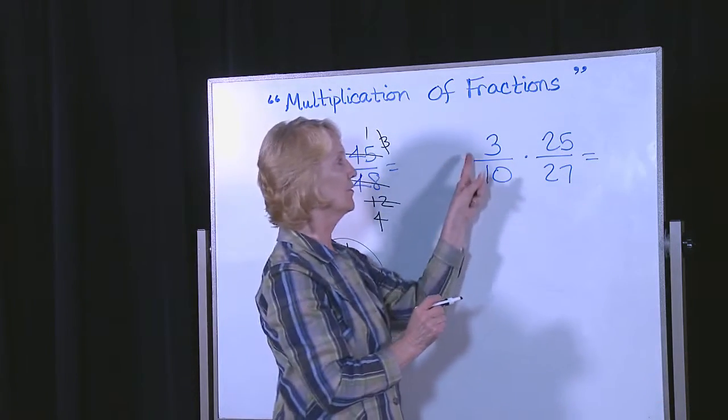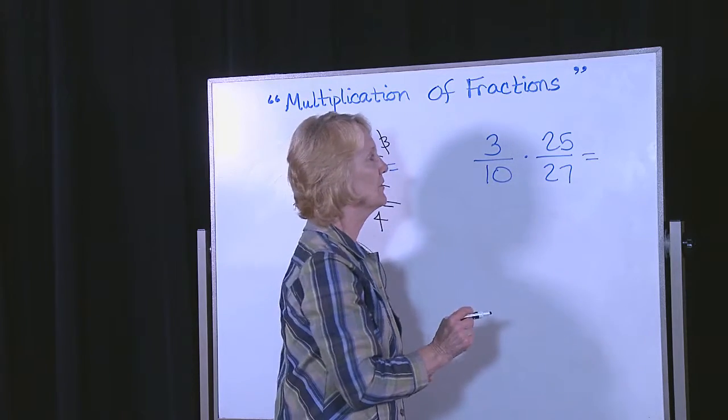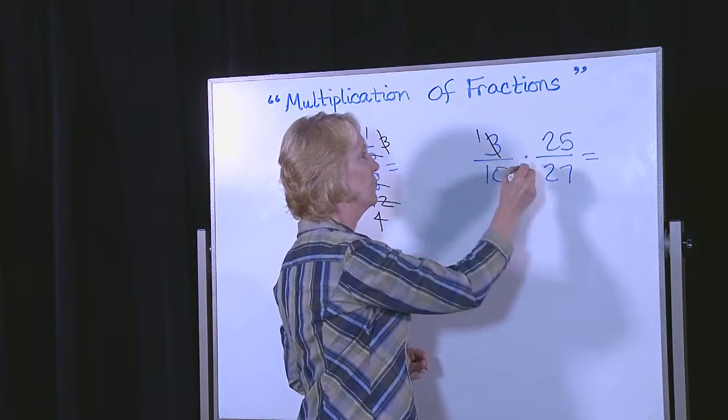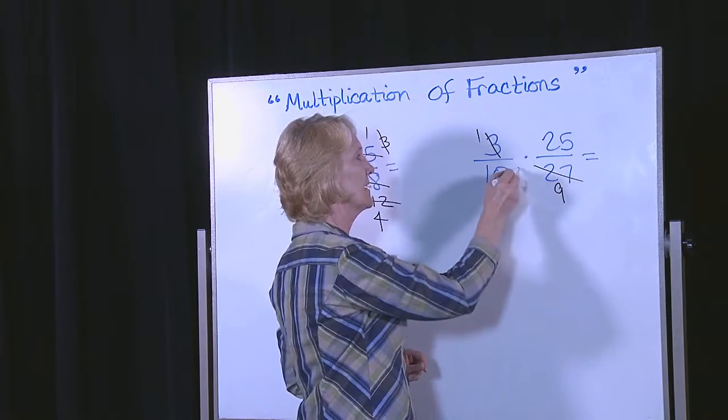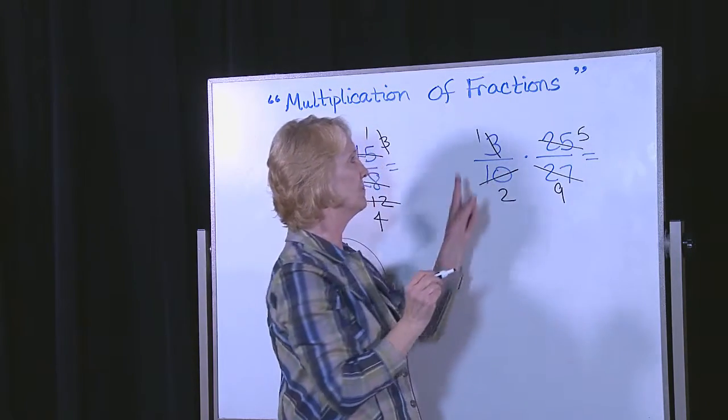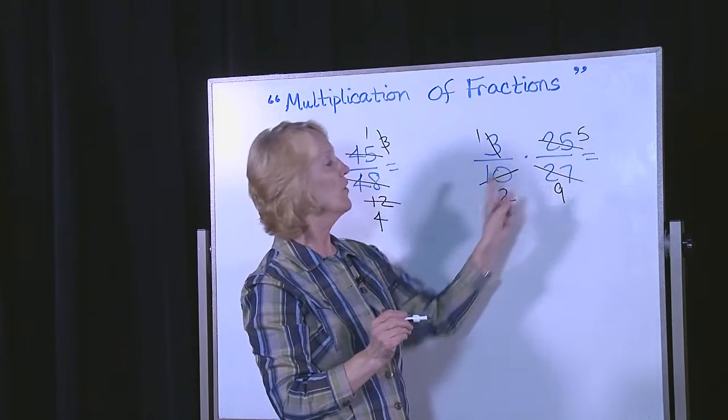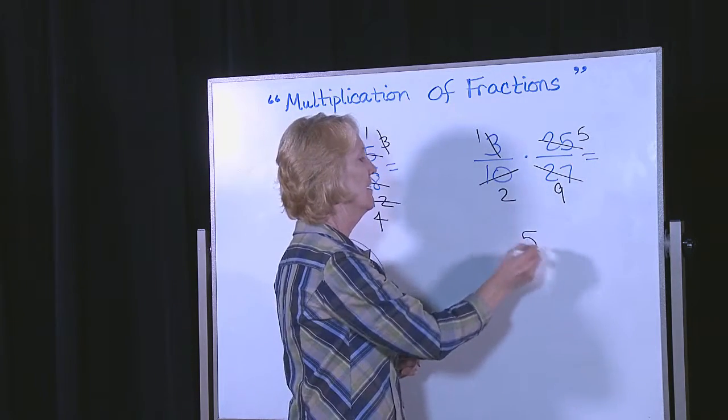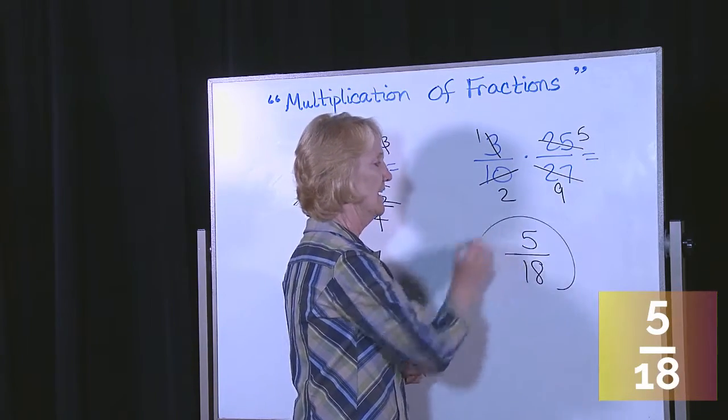Next one. 3 tenths times 25 over 27. 3 goes in here once. 3 goes in there 9 times. 5 goes in here twice. 5 goes in there 5 times. 1 times 5 over 2 times 9. 5 eighteenths. And you're done.